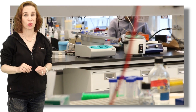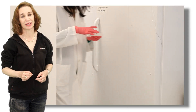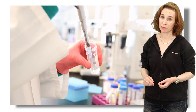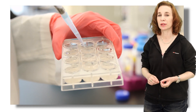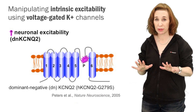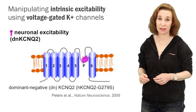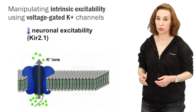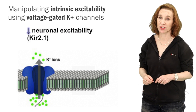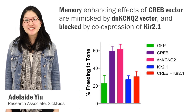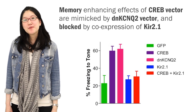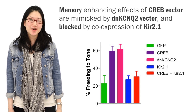Here we used several methods to increase neuronal excitability and examine their effects on memory formation and neuronal allocation to the memory trace. Neuronal excitability is determined by the composition and distribution properties of ion channels in the plasma membrane. Increasing CREB function increases neuronal excitability in part by decreasing voltage-gated potassium currents. As our first method, we used HSV vectors to express a dominant negative KCNQ2 to increase excitability, and KR2.1 — an inwardly rectifying potassium channel — to decrease excitability. We found that the memory-enhancing effects of increasing CREB levels are mimicked by dominant negative KCNQ2, and blocked by coexpression of KR2.1 to counteract the increased excitability produced by CREB.